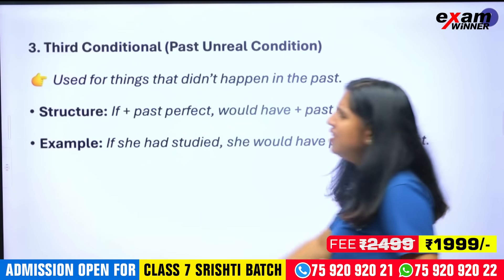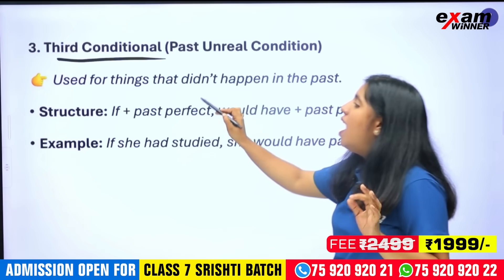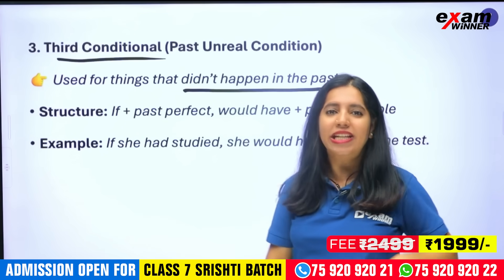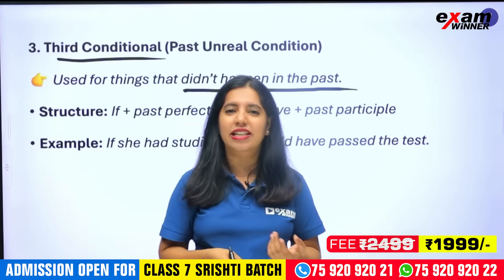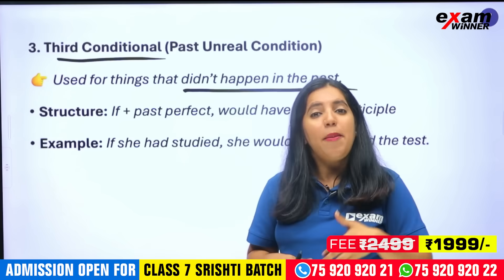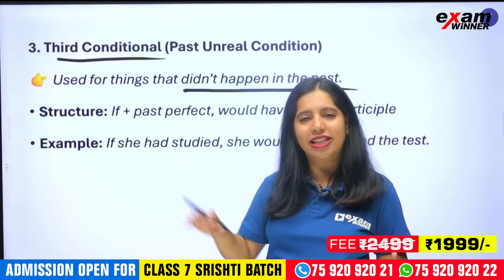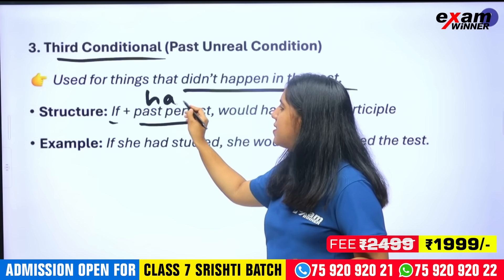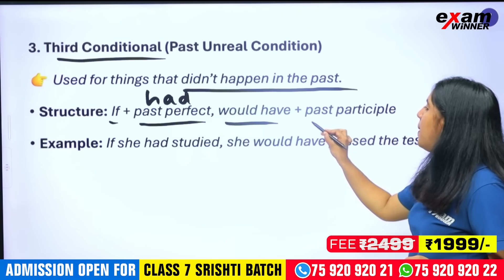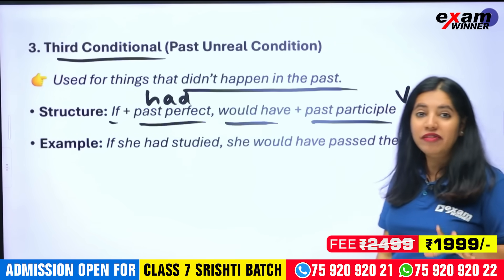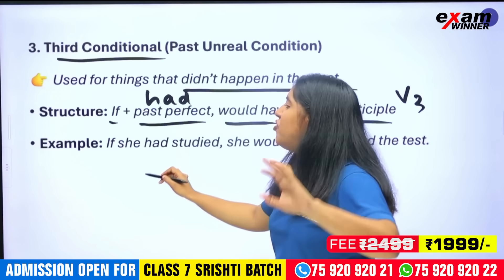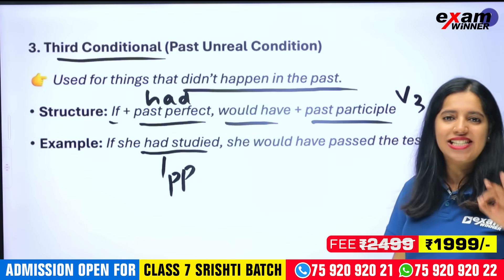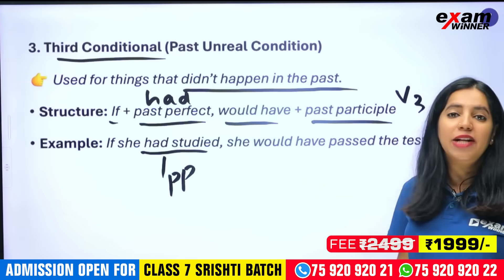Next, the third condition. Third condition is easy — it refers to something that didn't happen in the past. The if-part uses past perfect: 'had' plus V3 form. Then the main part uses 'would have' plus past participle. If we go to the past perfect, you have to say 'had.' Then would have is past participle. Example: If she had studied — 'had studied' is past perfect.